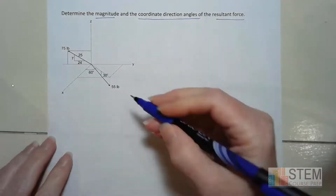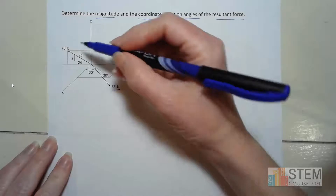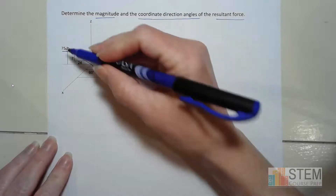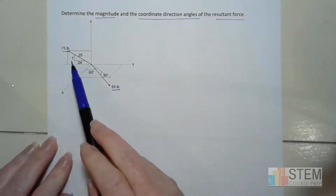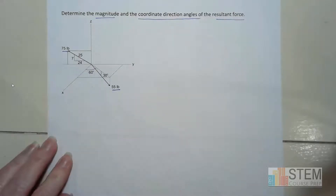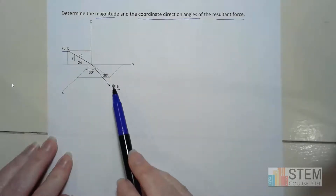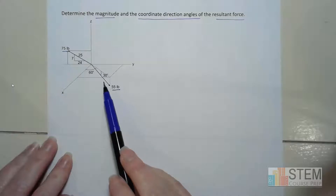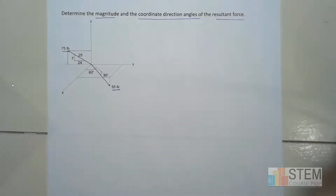So if you look, we've got two forces: this 55 pounds and then 75 pounds. The 75 pounds has a little right triangle to use to get the angular data, and here I've got the transverse and azimuth angles. We've got two different ways to do it.